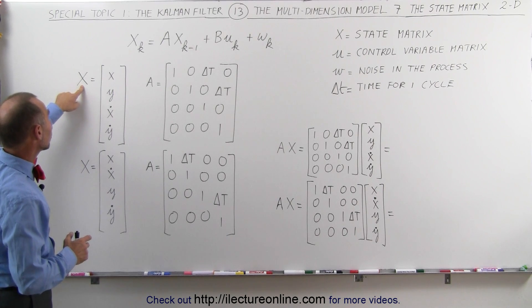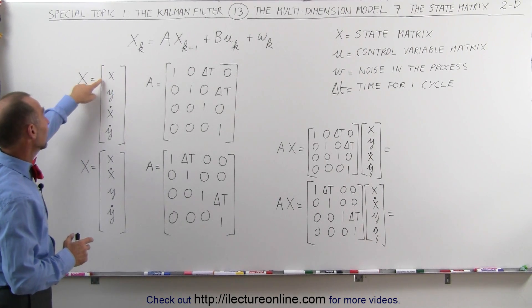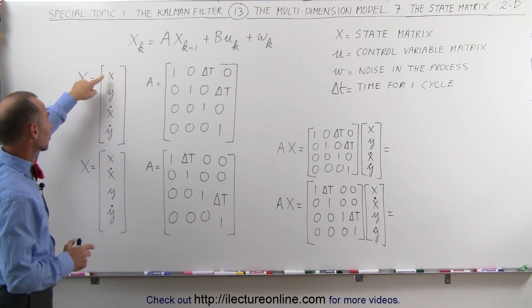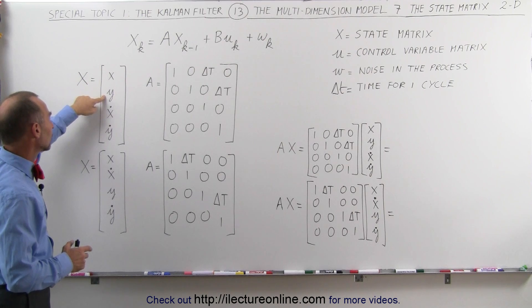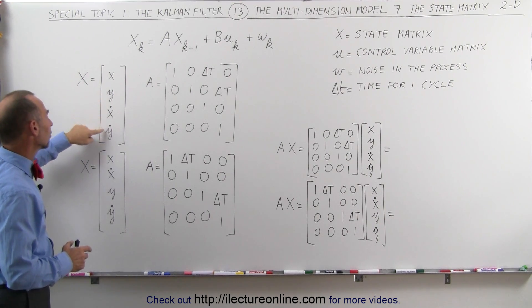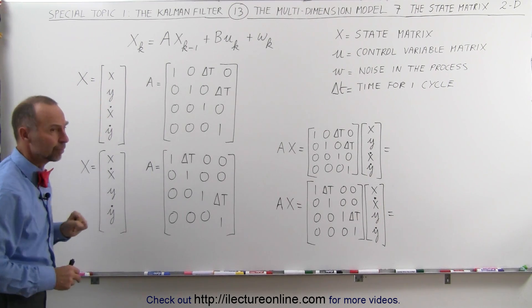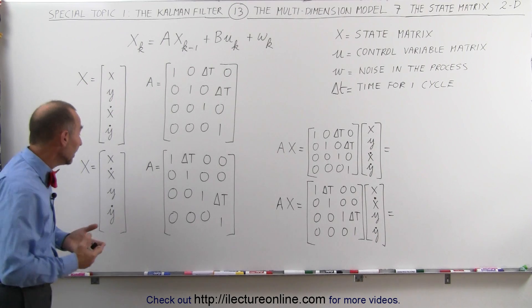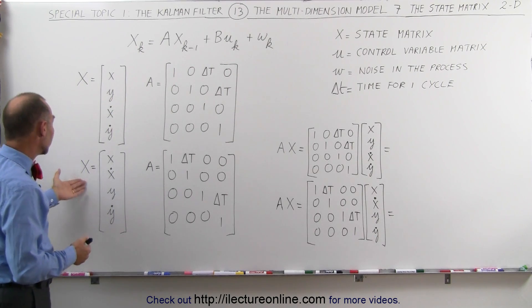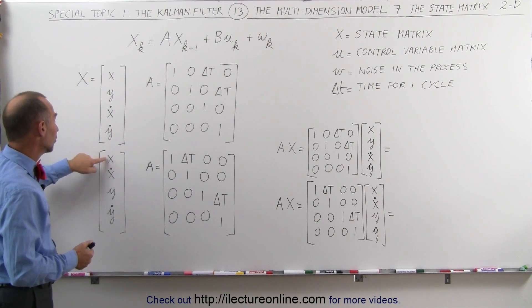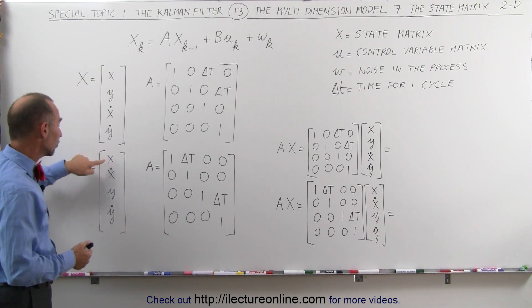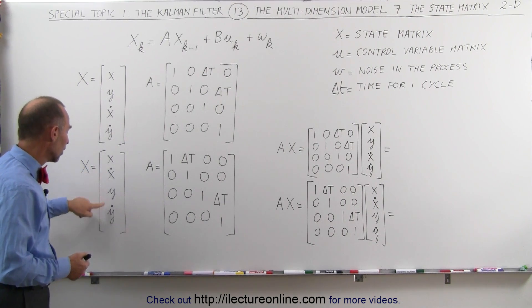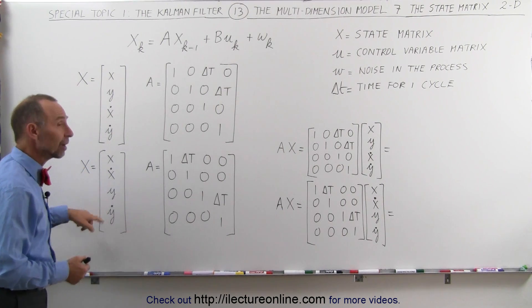Here we have the state matrix defined in the x and the y direction: position in the x direction, position in the y direction, velocity in the x direction, velocity in the y direction. To show you that you can have it differently, here we have another state matrix where we have position in the x direction, velocity in the x direction, position in the y direction, velocity in the y direction.